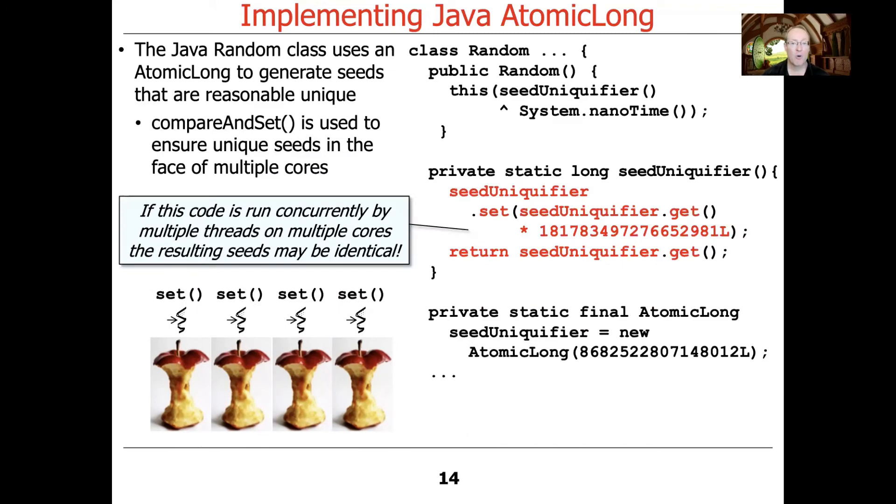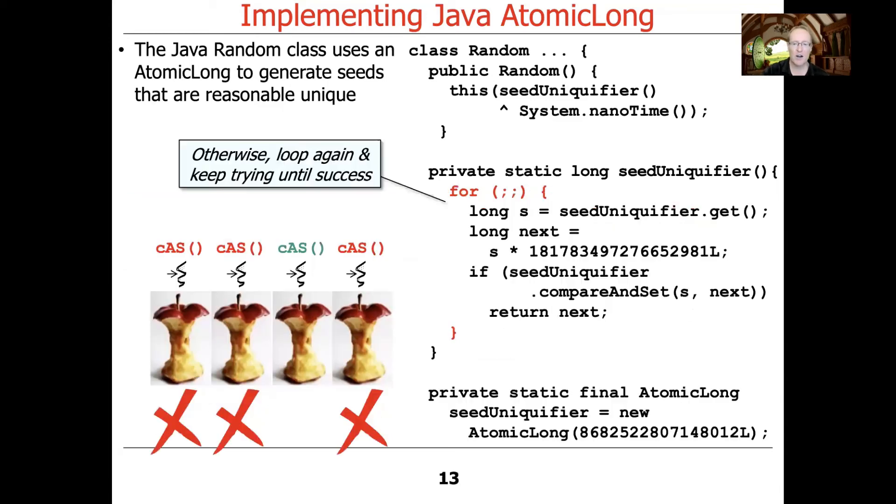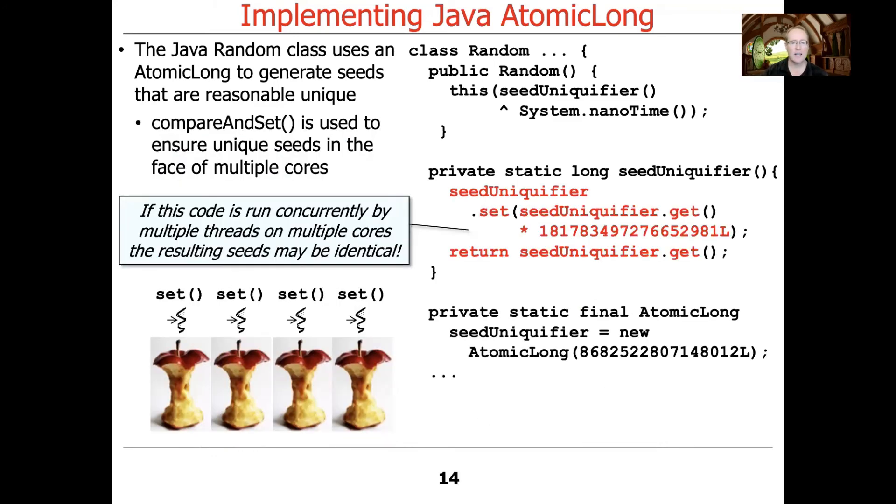And if we didn't do this trick here with the loop and the compareAndSet call, you could end up with multiple threads getting identical seeds, which would then make the random number generator less random because it all start out with the same seed value or something very close to it.